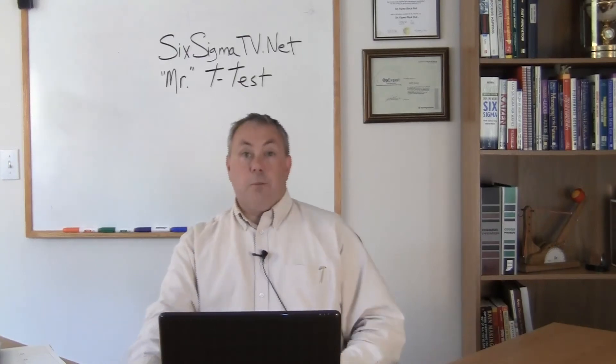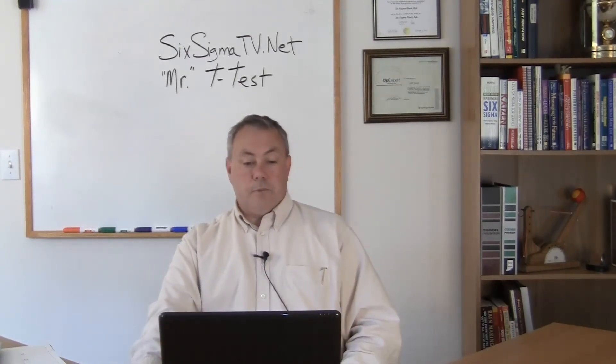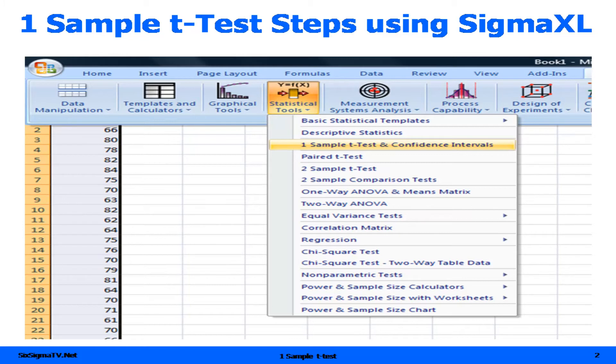Now, let's take a look at how we do that in Sigma XL. First, in Sigma XL, we would select statistical tools, then one sample t-test, and confidence intervals.